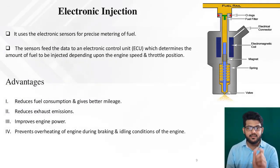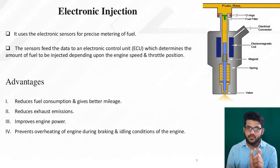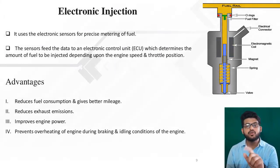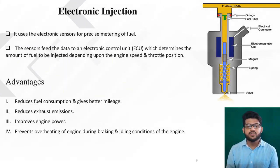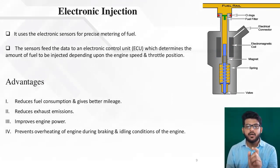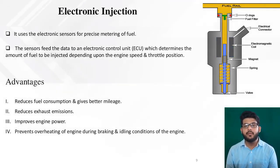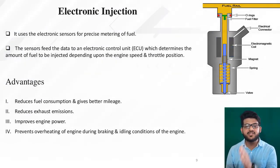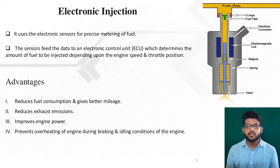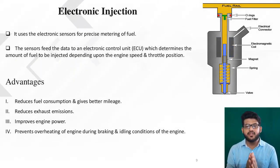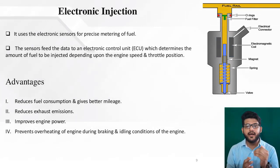The sensor feeds data to the Electronic Control Unit (ECU), which determines the amount of fuel to be injected depending upon the engine speed and throttle position. This is the main criteria that must be satisfied — fuel injection must change depending on speed and throttle position.